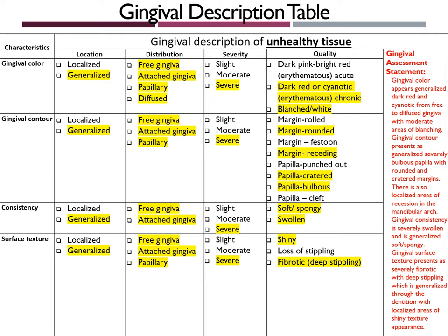My gingival assessment statement reads as follows: Gingival color appears generalized dark red and cyanotic from free gingiva to diffused with moderate areas of blanching. Gingival contour presents as generalized severely bulbous papilla with rounded and cratered margins, and localized areas of recession in the mandibular arch. Gingival consistency is severely swollen and generalized soft and spongy. Gingival surface texture presents as severely fibrotic with deep stippling, generalized throughout the dentition, with localized areas of a shiny surface texture appearance.